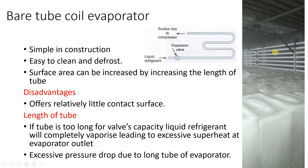In a cold storage or ice plant, bare tube evaporator coils are mounted on the walls as well as the ceiling. Because these coils are on the walls and ceiling, floor space is saved, allowing maximum floor space to store more product inside the cold room or cold storage.